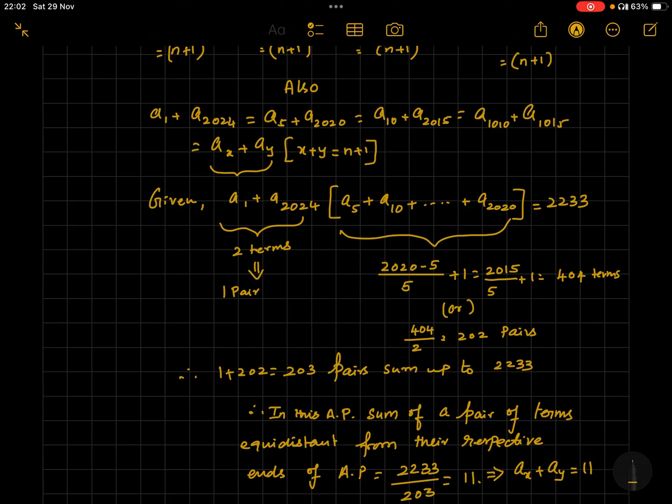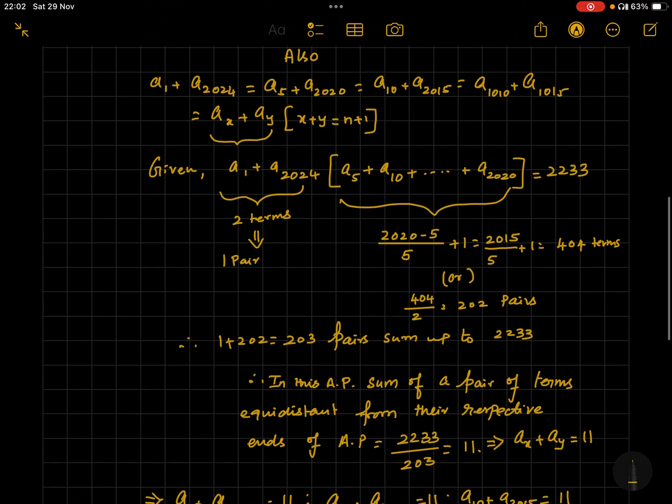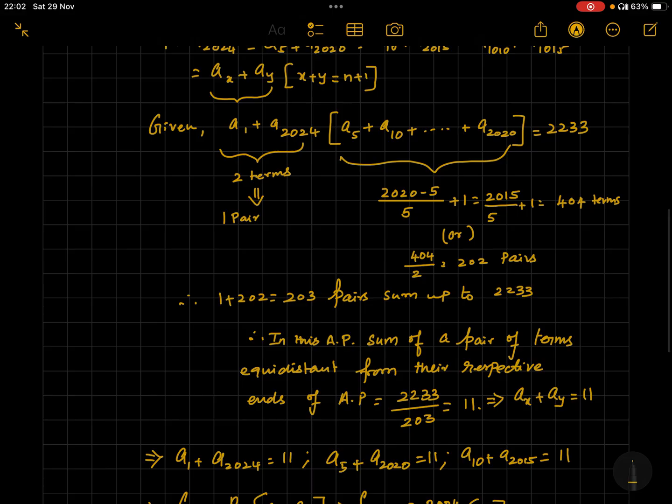Which gives us 1 divided by 2, 202 such pairs which are equidistant from the respective position of the AP. So we are having one more pair, that is a1 plus a2024. Therefore we have 203 pairs which add up to 2233.